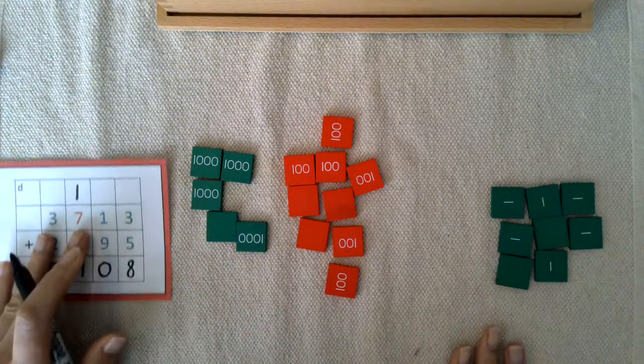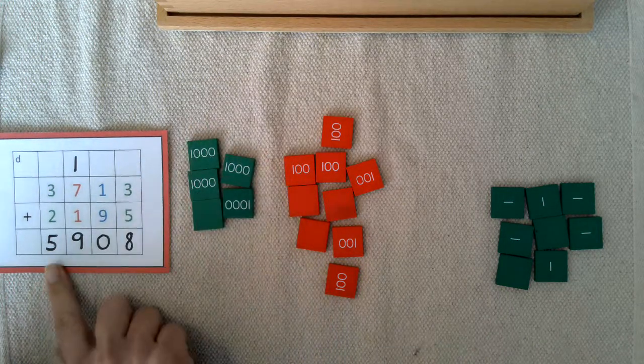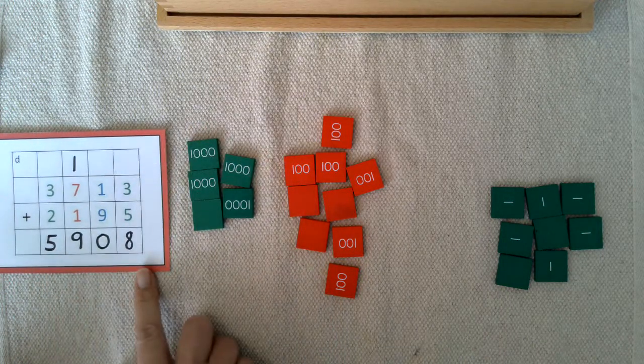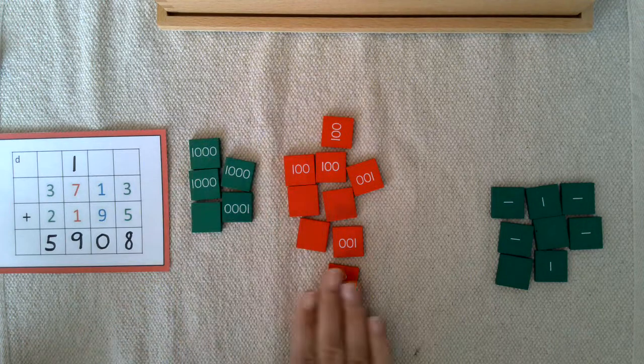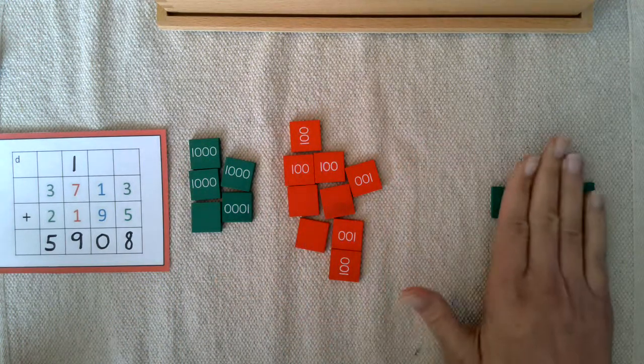Okay. So our sum or how much we have all together is 5,908. And you can see here we have 5 thousands, 9 hundreds, zero tens, 8 ones.